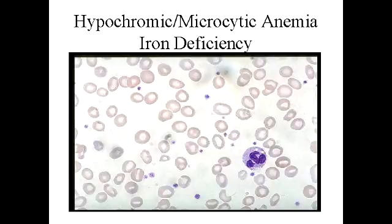Define the meaning of hypochromic microcytic anemia. Hypochromic just means that the red blood cells are paler than usual, and microcytic just means that it's characterized by small red blood cells. So, hypochromic microcytic anemia would be small red blood cells that are paler than usual.